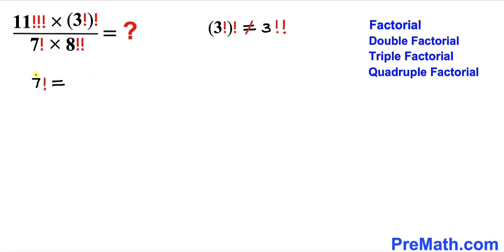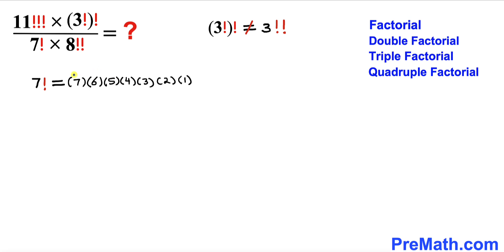Let me give you the first example: 7 factorial. That's simply 7 times 6 times 5 times 4 times 3 times 2 times 1. With a single factorial, the common difference between consecutive numbers is just 1.